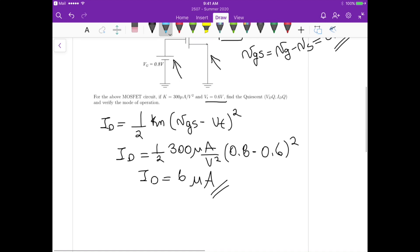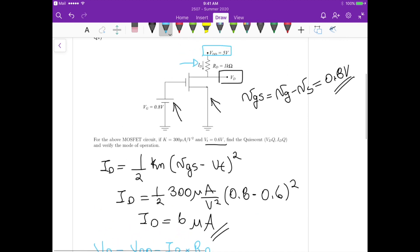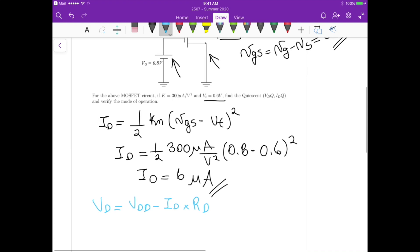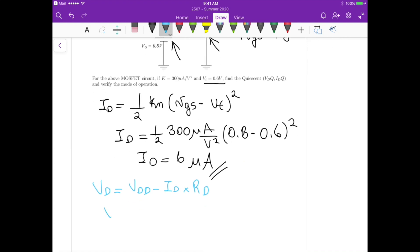So in this case, Vd is the same as Vdd minus the drain current times the drain resistance, which in our case is 1k ohms. So this gives us a Vd that equals 4.994 volts.